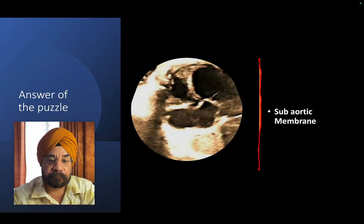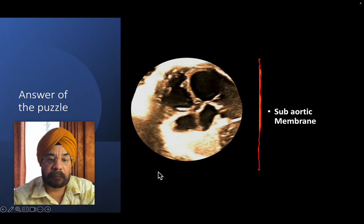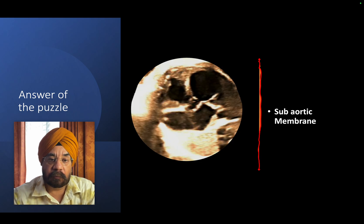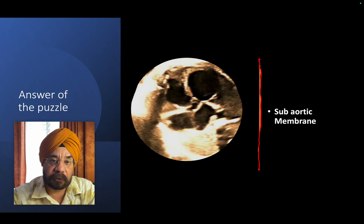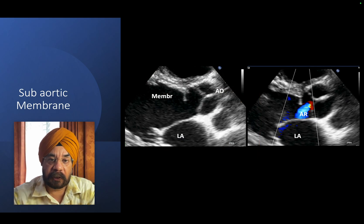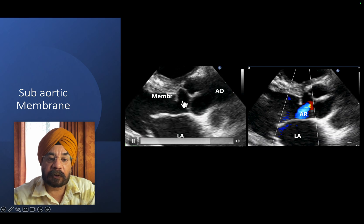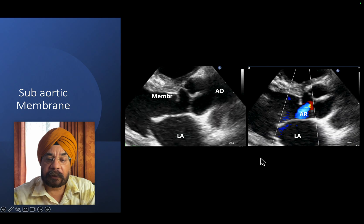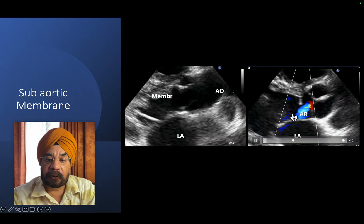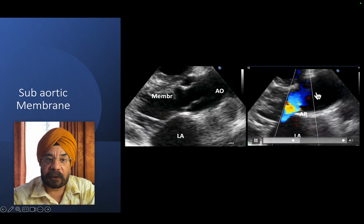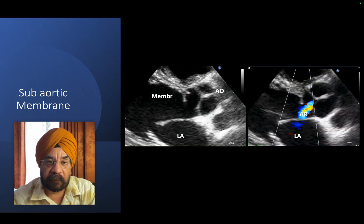The problem was in the sub-aortic region. We found a sub-aortic membrane in this patient, causing severe obstruction to the left ventricular outflow tract - behaving like aortic stenosis. You can see the membrane below the aortic valve, flow acceleration at the membrane, and a high-velocity jet crossing the membrane. This jet hits the aortic valve, damages it, and produces aortic regurgitation.